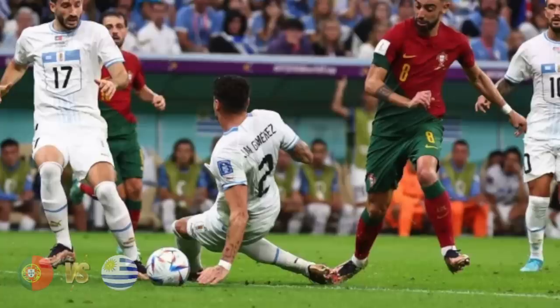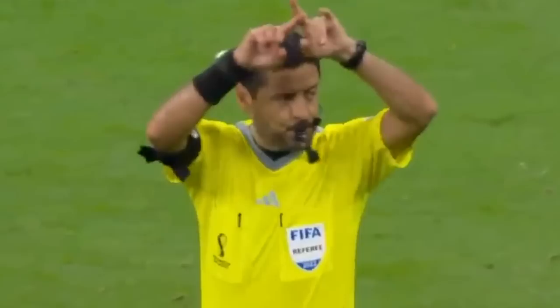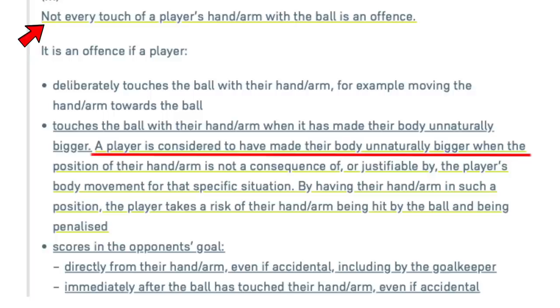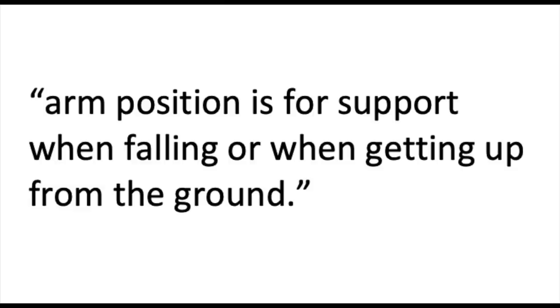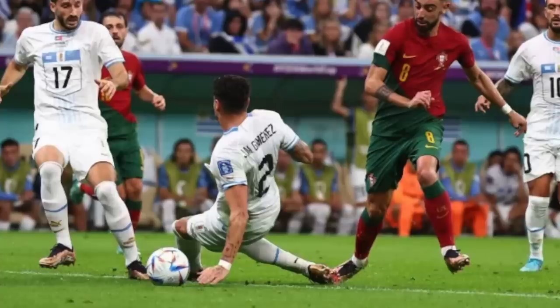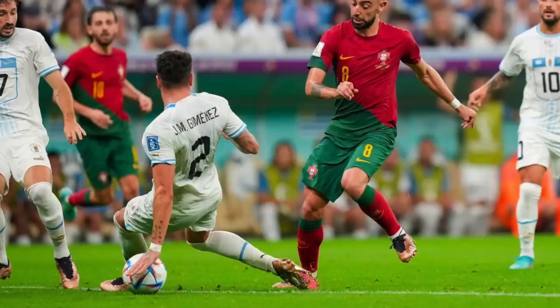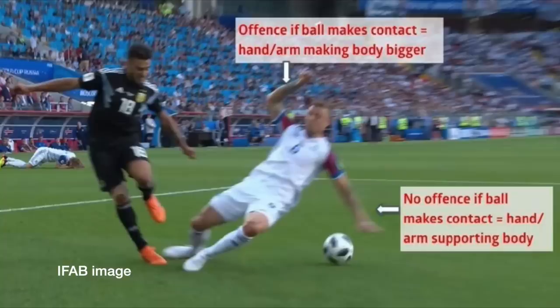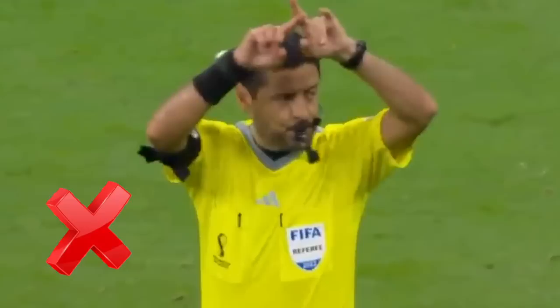Portugal vs Uruguay. The first decision is VAR having the referee review a potential penalty for Portugal, after the referee chose not to give it on the field. The IFAB updated their guidance with examples of when a player should not be penalised for handball, even if their arm is away from the body — one specific example covers when arm position is for support when falling or getting up from the ground. The Uruguay player is very clearly using his left arm for support as he falls, and this is almost identical to the example the IFAB issued. VAR and the referee should not have awarded a penalty.